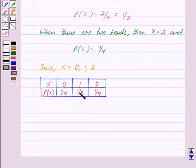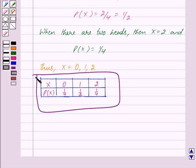And we get this as our probability distribution table. So this is our answer. Hope you have understood the solution. Bye and take care.